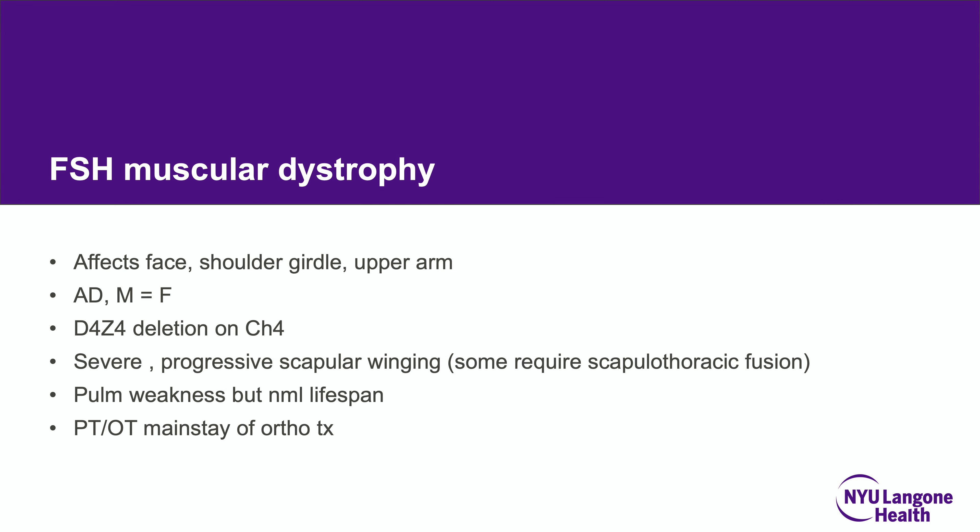FSH muscular dystrophy affects the face, shoulder girdle, and upper arm. Males and females are equally affected as it is autosomal dominant. Patients can get severe progressive scapular winging, sometimes requiring a scapulothoracic fusion. There can be significant pulmonary weakness, but interestingly, they have a normal lifespan. PT and OT are the mainstay of orthopedic treatment.